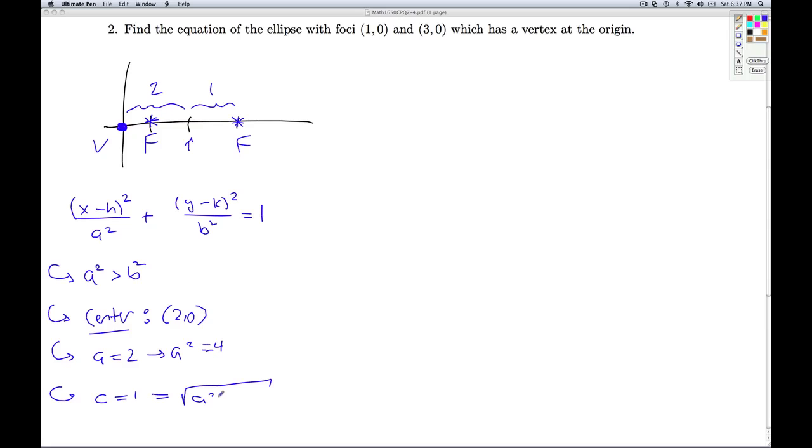And since I know a squared's got to be bigger than b squared in this case, I know that 1 is a squared minus b squared. The a squared I know is 4. So if I solve this and square both sides, I get b squared is 3. So now I have everything I need for my final answer.